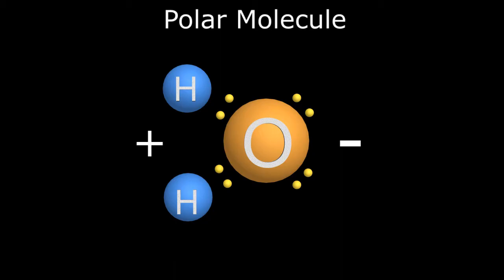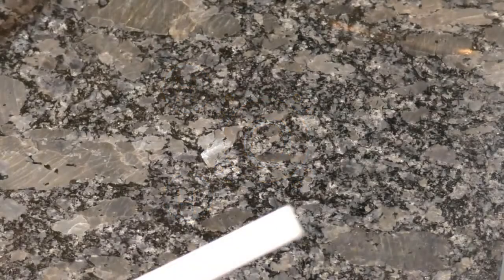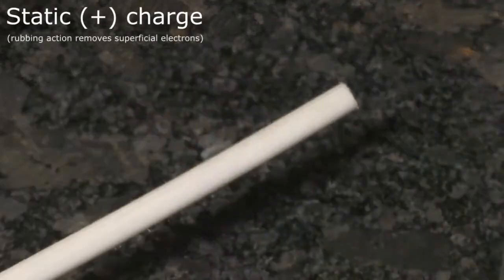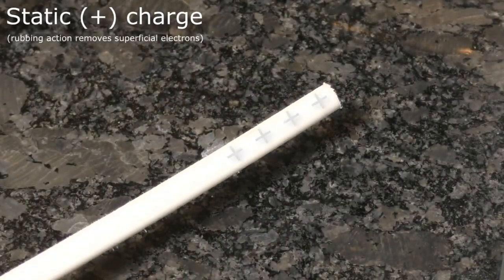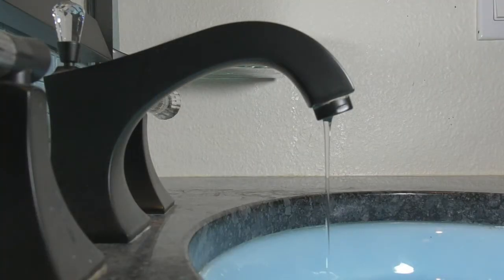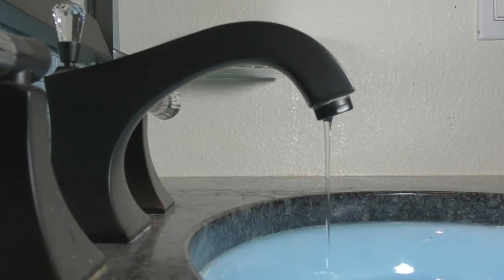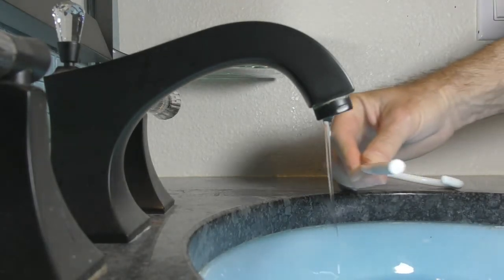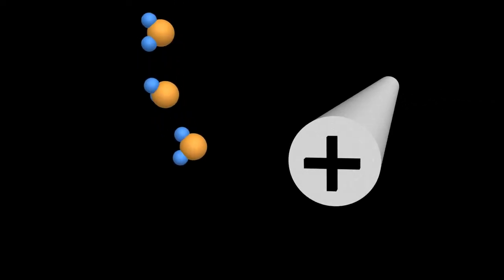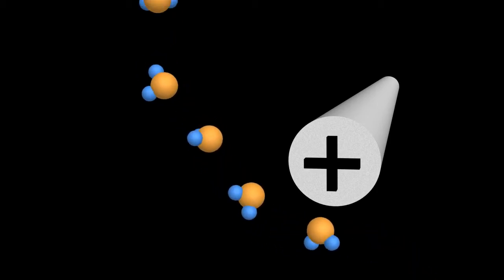We can actually demonstrate this polar nature of water with a quick little experiment you can do yourself at home. If you take a glass or plastic rod and rub it with a cloth, you create a static positive charge on the rod as the rubbing action removes some of the superficial electrons on the rod's surface. If we have a thin stream of water from the tap, the thinner the better, and we bring the rod close to the stream, you can see the charge on the rod actually causes the stream to bend. The positive charge on the rod attracts the negative or oxygen pole of the water molecule and pulls it towards the rod.